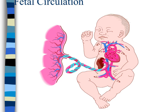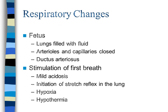The placenta's job is to get rid of waste and provide nutrients for the baby. In the fetus, the lungs are filled with fluid, arterioles and capillaries are closed, and there is a ductus arteriosus. With the first breath, the baby can become mildly acidotic, and the stretch reflex in the lungs is initiated. The two main concerns after birth are hypoxia and hypothermia — ensure proper positioning, appropriate oxygenation, and dry and wrap the baby in clean towels and blankets.